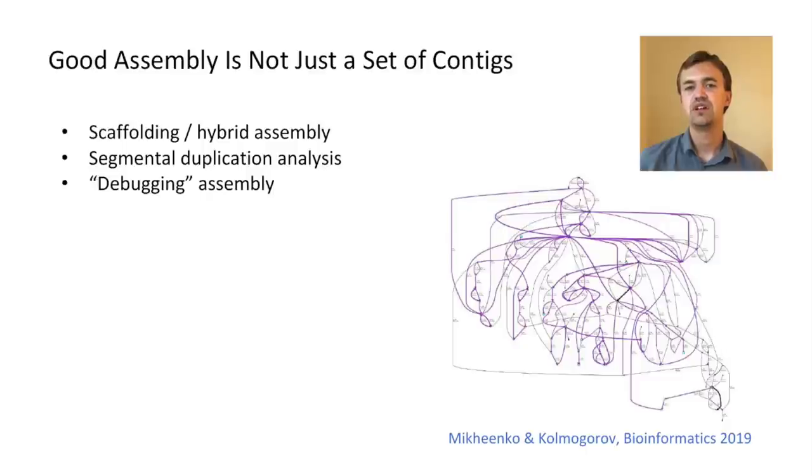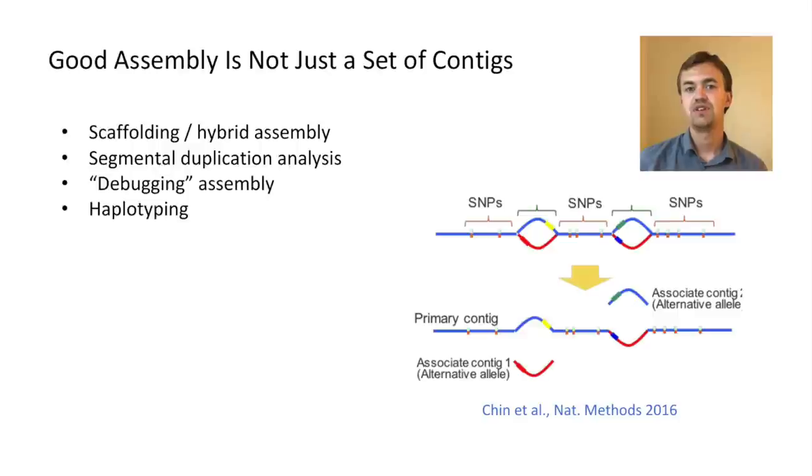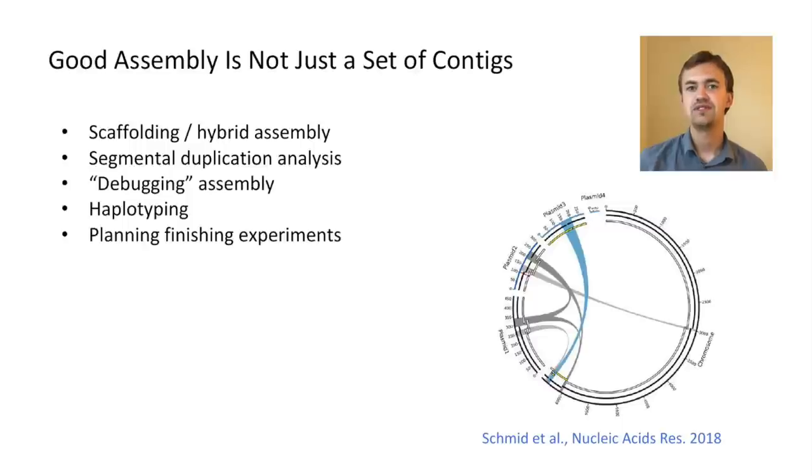It could be used for debugging your assembly. If you can visualize the graph, you should be able to tell where your assembly made the wrong decision and you can hopefully fix it. Haplotyping - alternative haplotypes induce bubbles on the assembly graph which could be later used by haplotyping software. And finally, assembly graphs answer the question why your assembly is not complete. Perhaps it is a long unresolved repeat or maybe a gap in coverage. But by looking at the graph you should be able to tell what went wrong and plan additional finishing experiments.